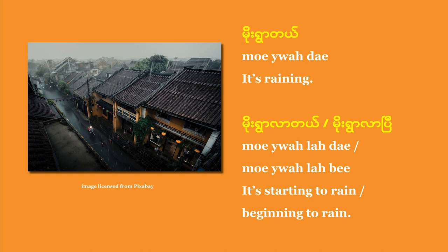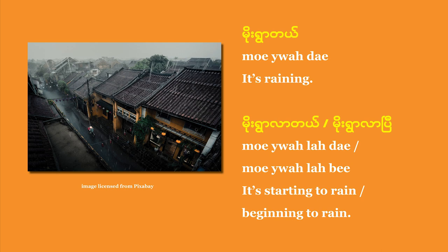The two constructions are interchangeable — they mean effectively the same thing, but mo joare la bi is more common. Here in San Francisco, if I see the fog slowly dissolving, the sun slowly peeking out, and the temperature getting warmer, I'd say in Burmese: no joare la bi. It's getting warm. It's starting to become warm. No joare is the verb 'to be warm,' but no joare la bi is the way to talk about the beginning phase of getting warm — the inception phase.